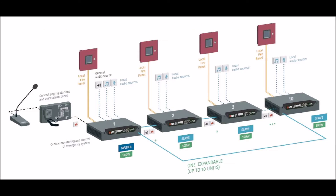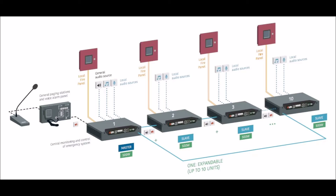This input can be used as a regular input in all the devices of the system. Therefore, you will have two local inputs on each slave. As an example, you can connect here one analog microphone and one radio player.